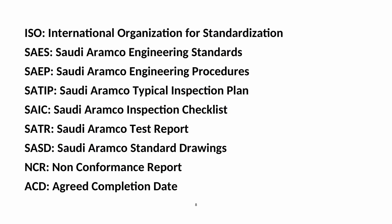Continuing abbreviations: ISO — International Organization for Standardization; SAES — Saudi Aramco Engineering Standards; SAEP — Saudi Aramco Engineering Procedures; SATIP — Saudi Aramco Typical Inspection Plan; SAIC — Saudi Aramco Inspection Checklist; SATR — Saudi Aramco Test Report; SASD — Saudi Aramco Standard Drawings; NCR — Non-Conformance Report.